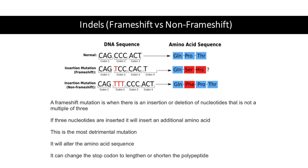Short insertions and deletions of one or a few up to a thousand or several thousand nucleotides — sometimes called indels — may happen in intergenic or intronic regions, or they may happen within protein coding regions. Within protein coding regions, if an indel involves three or a multiple of three nucleotides, it will only add or delete one or several codons without causing a frameshift. Otherwise, it may cause a frameshift.